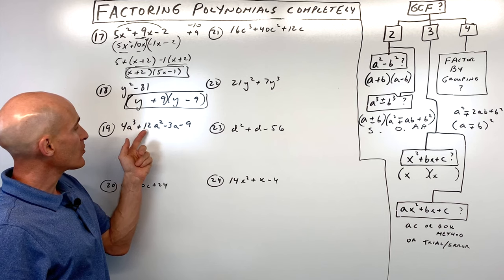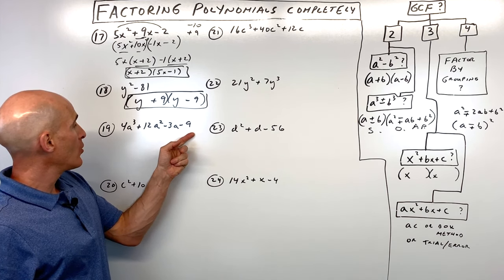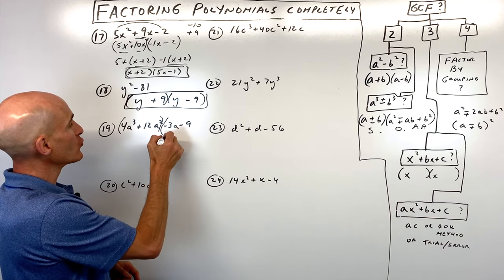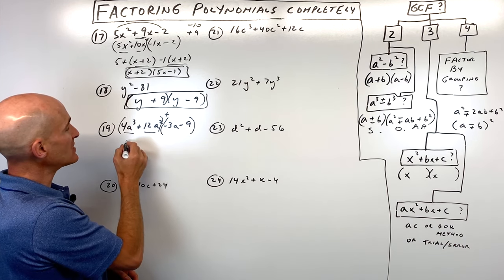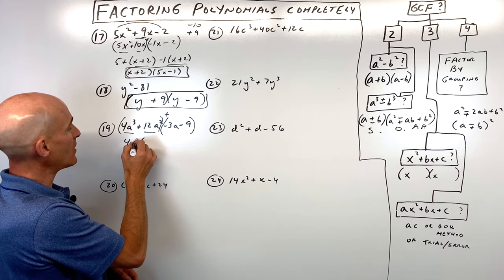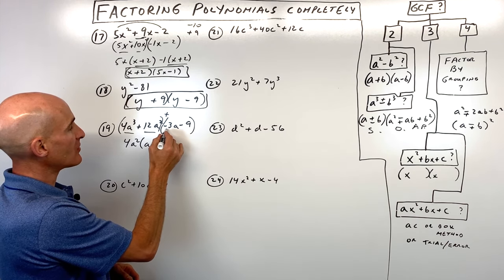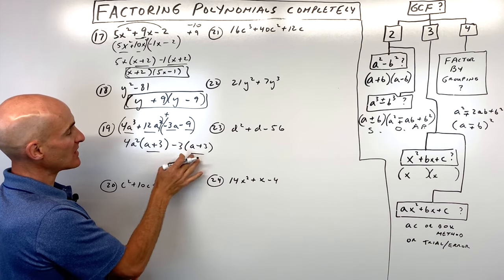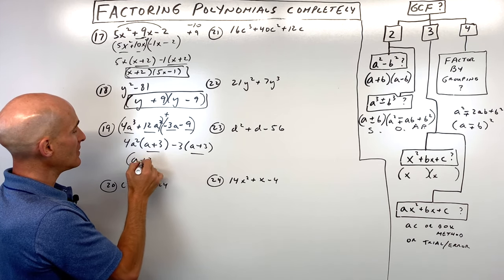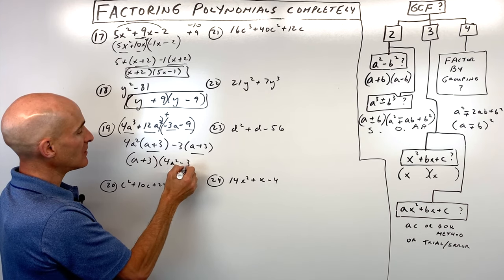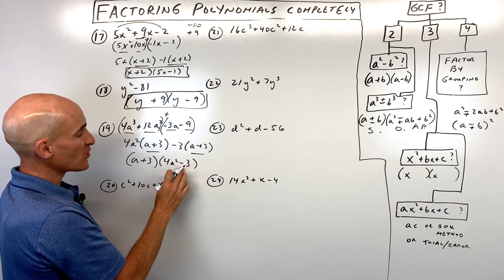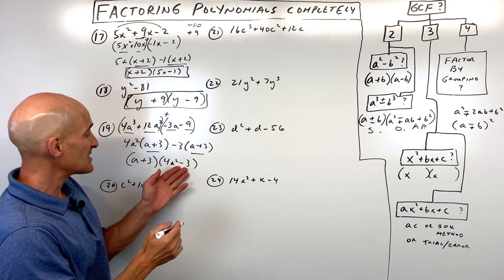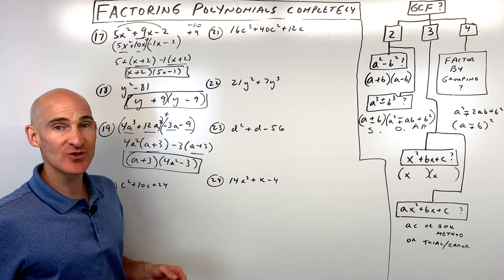Number nineteen has four terms, no greatest common factor, so we use factoring by grouping. Factor out 4a squared from the first pair, giving a plus 3. Factor out negative 3 from the second pair, also giving a plus 3. Factor out a plus 3 to get a plus 3 times 4a squared minus 3. Note: if this had been 4a squared minus 9, that would be a difference of two squares and we could factor further, but in this case we can't.